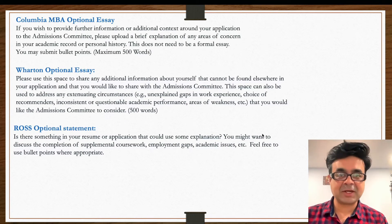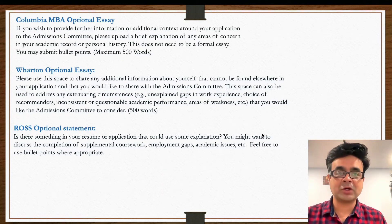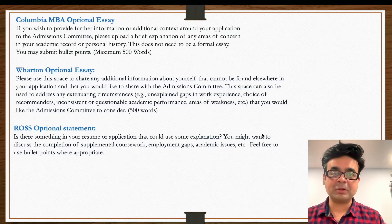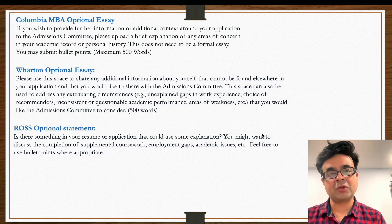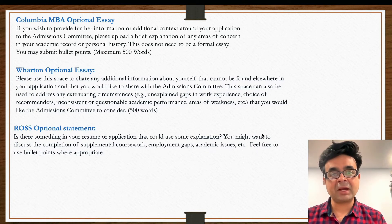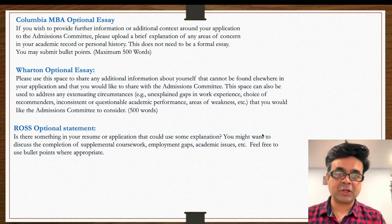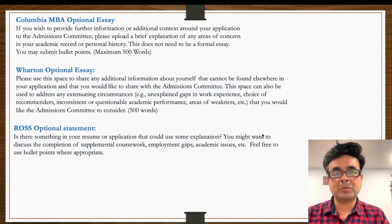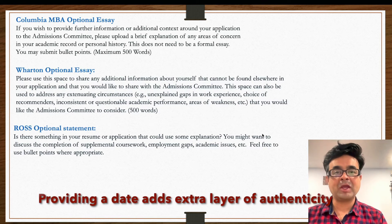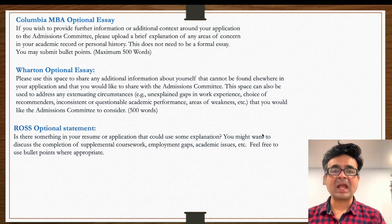Here is my final advice: the optional essay doesn't have to be 100, 200, or 300 words. Be concise, write in bullet points, and make sure you get your point across. If there are events in your life that you're waiting to happen, provide the admissions committee with a date for when you can update them — believe it or not, they will be waiting to hear back from you.